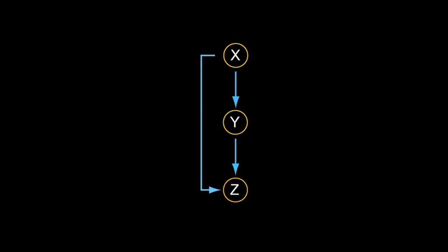One is coherent. The motif shown here is a coherent feed-forward. X activates Z directly and also through Y, so the sign of control of both paths are the same.